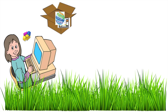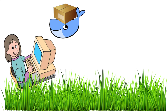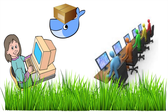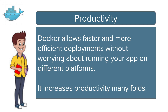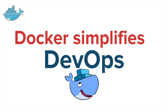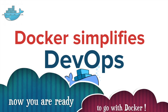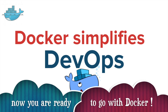With Docker, a developer can package all the software and its dependencies in the container, and Docker will make sure that all of this is deployed on every possible platform and everything works fine on every system. So Docker makes deployments very easy, very efficient, and very fast. With all these features, Docker makes DevOps very easy, efficient, and faster.